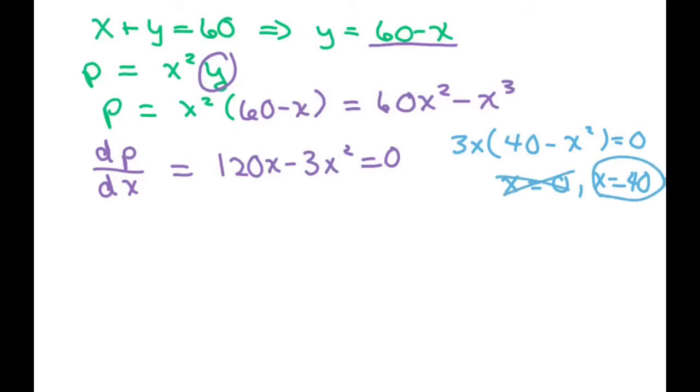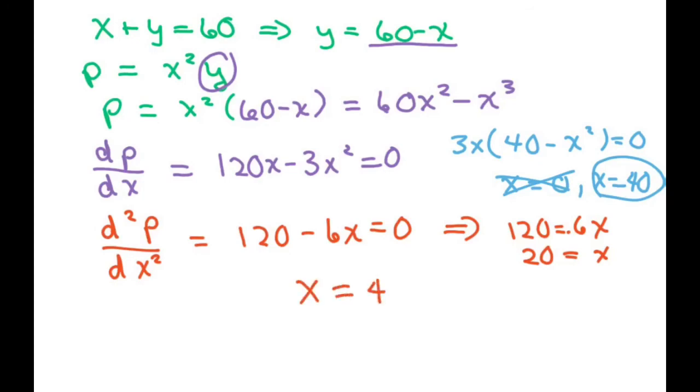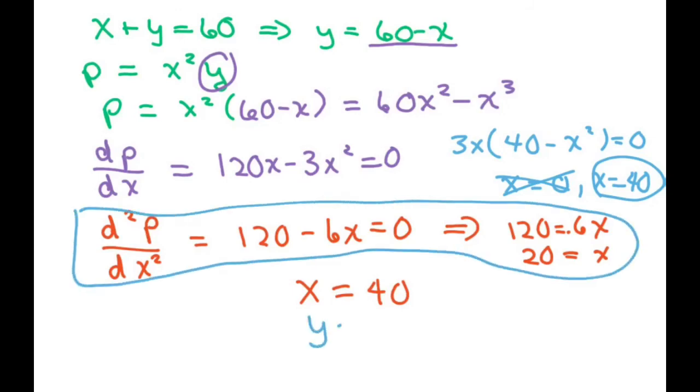We're going to do the second derivative of our P with respect to X, and that's going to be 120 minus 6X, and set that to zero. You're going to get 120 equals 6X, so X equals 20. Therefore, this results in our X equals 40. You don't even have to do this step, I just did it for the Y. You're going to get Y equals 20 because you could have just plugged this 40 back into our first equation.